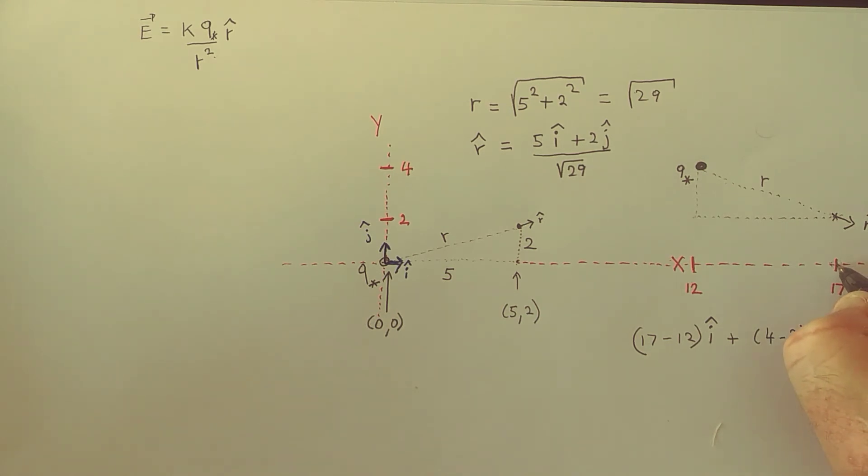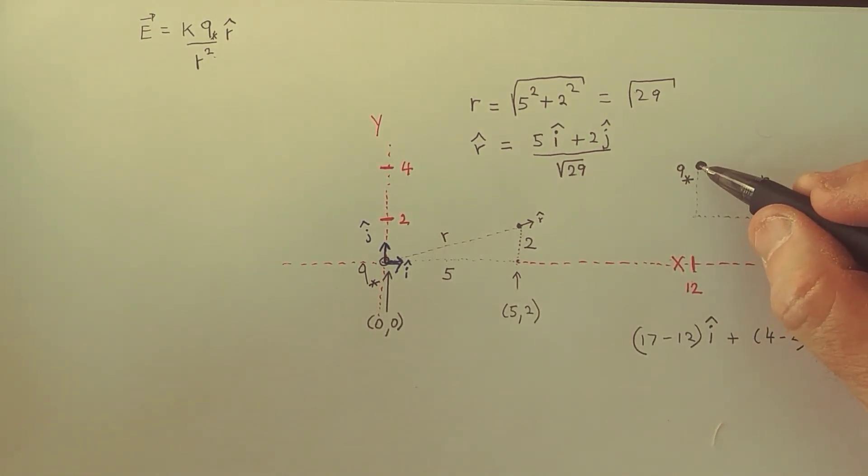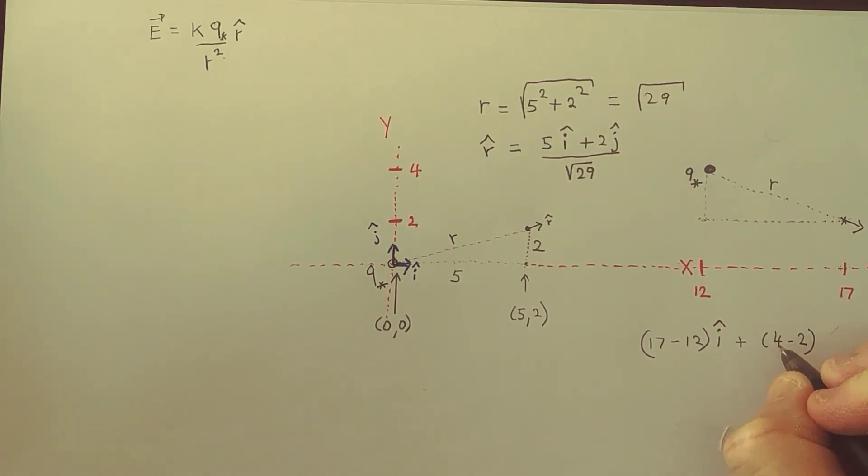Position of where we want the field minus the x value of the charge particle that creates the field. So we want the y value of where we want the field, which is here, minus the y value of the particle that creates the field. So it's just these two flipped around. So it's really 2 minus 4, minus 4 plus 2, and that's j hat.